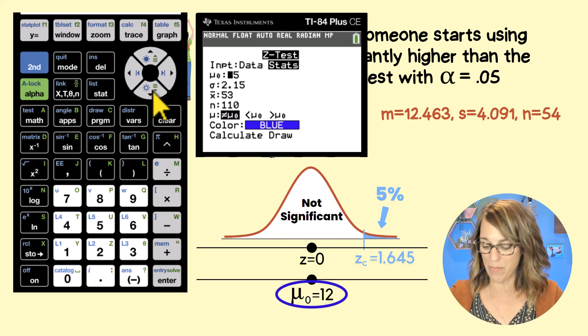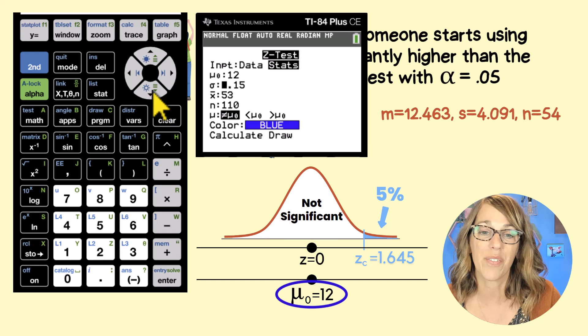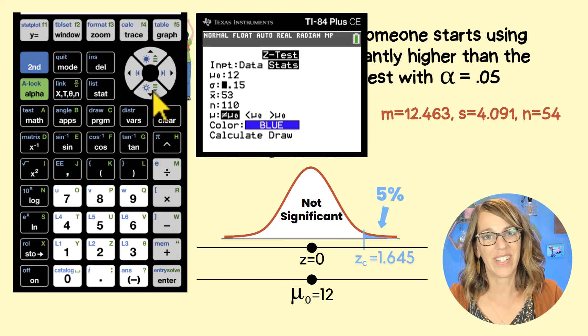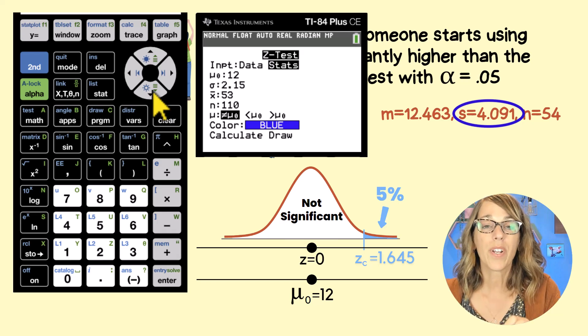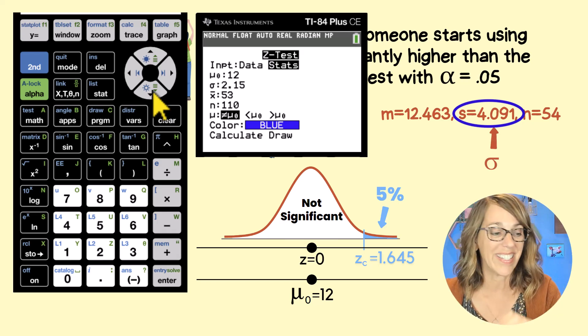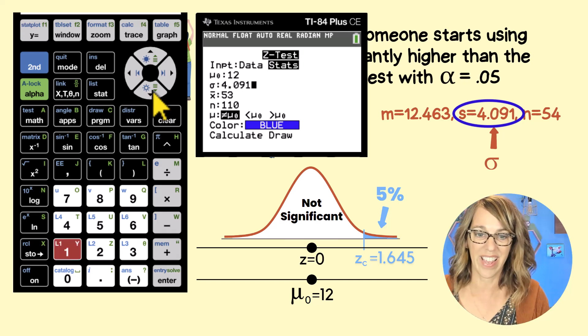Arrowing down, I can put in my hypothesized mean. This is 12. And then continuing to work our way down. They're asking me for the population standard deviation, but I only have the sample standard deviation. We're going to use that to estimate sigma. And that is 4.019. And then enter.